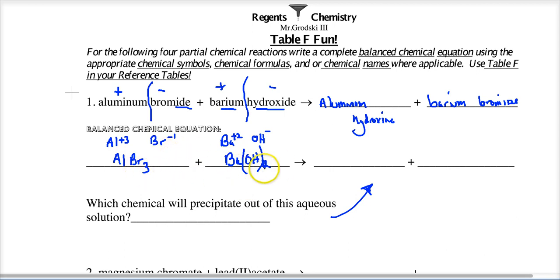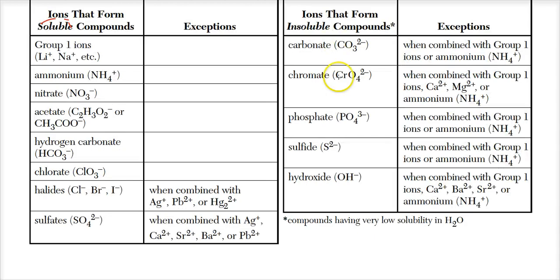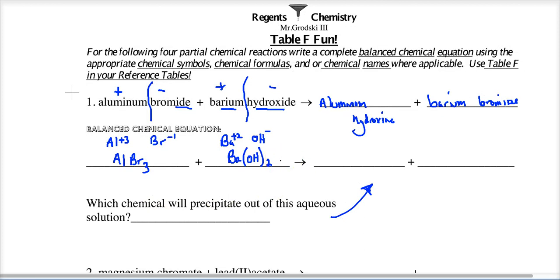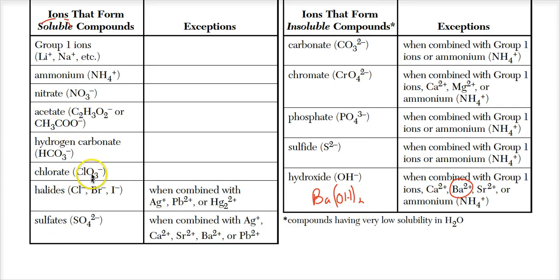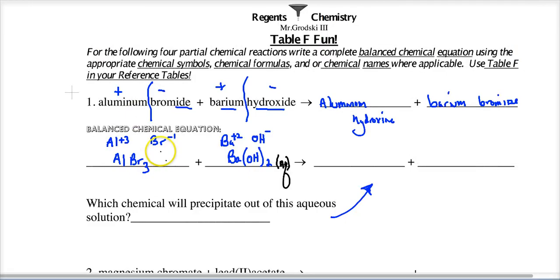Now evaluate. Barium hydroxide: hydroxides are normally insoluble, but barium is listed as an exception — so barium hydroxide is soluble. We write aqueous. Aluminum bromide: no aluminum listed in Table F; bromide is a halogen and normally soluble; aluminum is not an exception — so aluminum bromide is soluble. We write aqueous, meaning they are free ions. Pour them together and they will double replace.